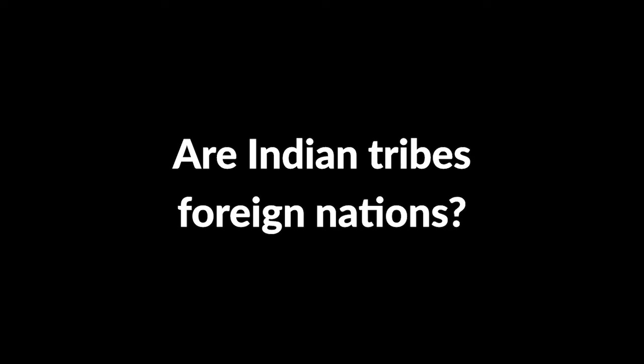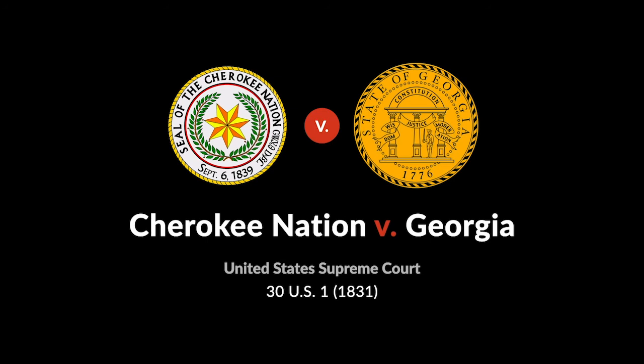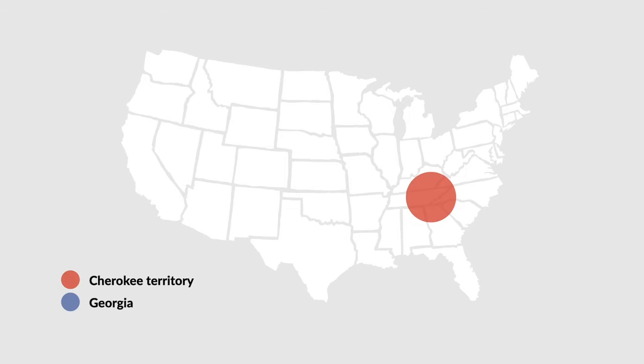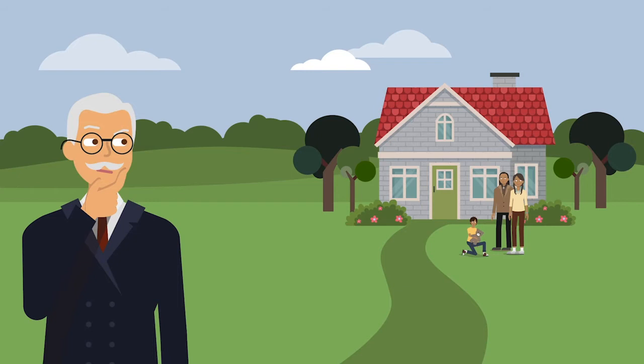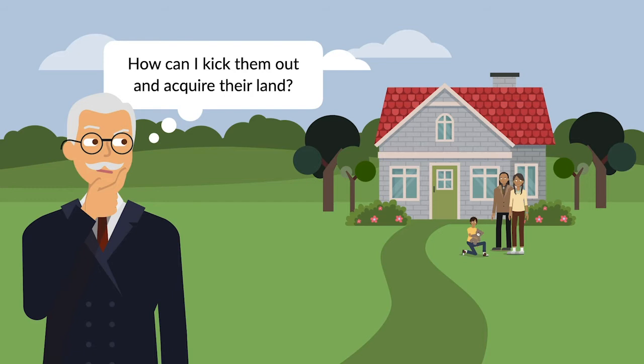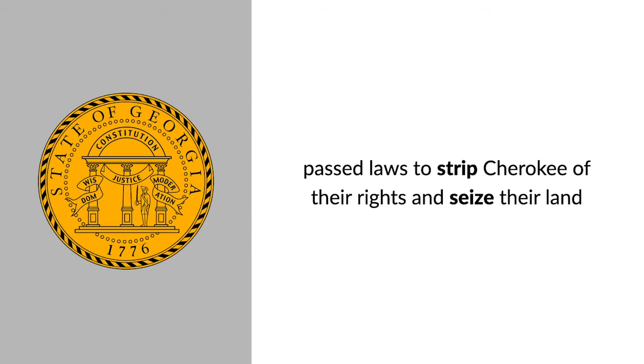But the situation was far less certain in 1831, when the United States Supreme Court decided Cherokee Nation versus Georgia. The Cherokee tribe had long resided in the southeastern United States, including what later became the state of Georgia. As white settlement increased and expanded westward, many white Americans wanted to displace the native inhabitants and acquire their land. Georgia passed several laws designed to strip the Cherokee of their rights and seize their land. The Cherokee Nation sued the state of Georgia in the United States Supreme Court, seeking an injunction prohibiting the enforcement of the Georgia laws.